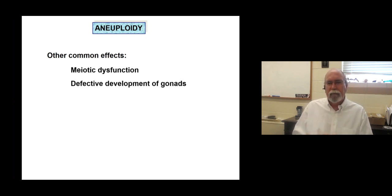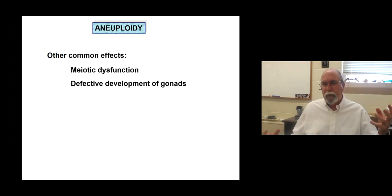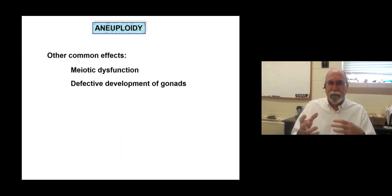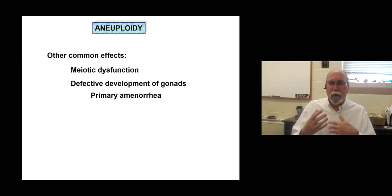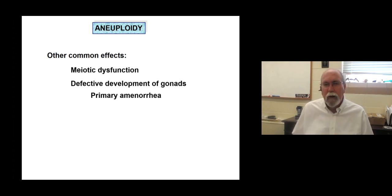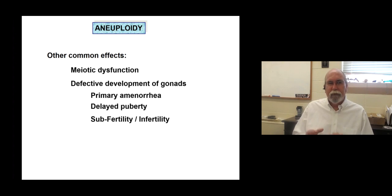A lot of the reproductive systems develop as secondary functions. Once the human fetus starts developing and hormonal control takes over, you get gonadal streaks — the initial gonadal tissues that then develop into testes or ovaries. These can become dysfunctional if hormonal control isn't present at the right time. This can lead to primary and secondary amenorrhea, which is the absence of a menstrual cycle. Delayed puberty is also commonly seen in individuals with sex chromosome variations, as well as fertility and subfertility.